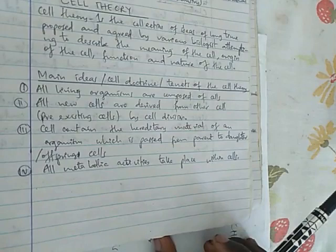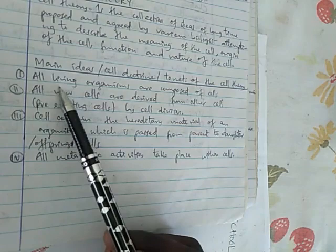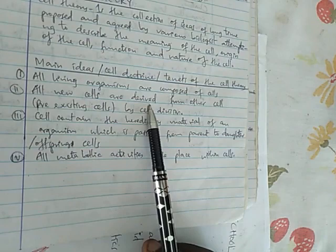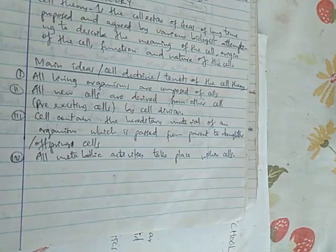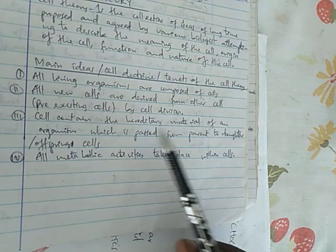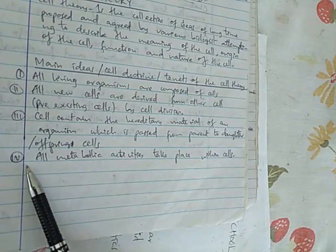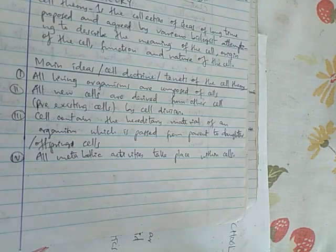Main ideas of the cell theory. The first idea, all living organisms are composed of cells. The second idea, all new cells are derived from other cells, that is pre-existing cells by cell division. Third idea, cells contain the hereditary material of an organism which is passed from parent to daughter cell or offspring. We're talking about RNA and DNA. Fourth idea, all metabolic activities take place within a cell.